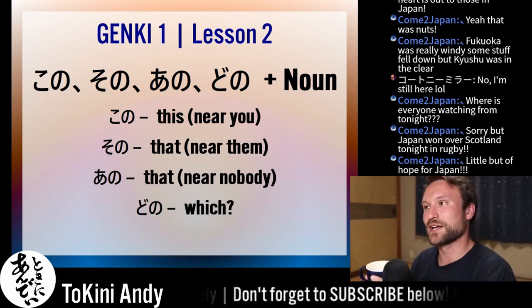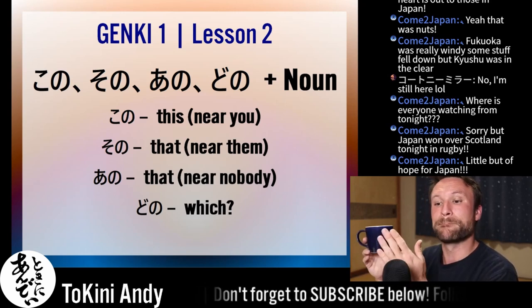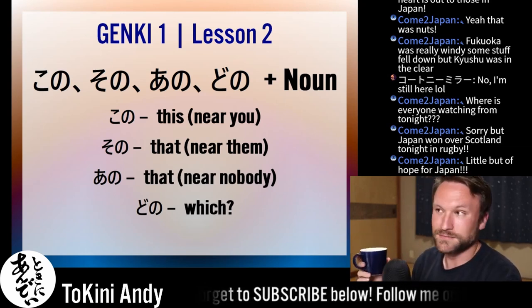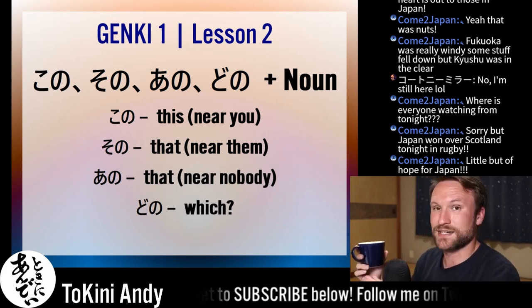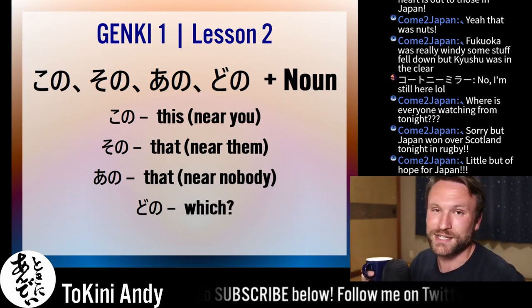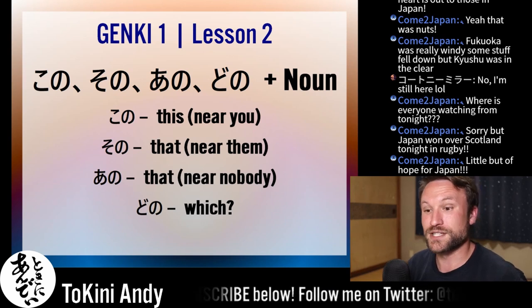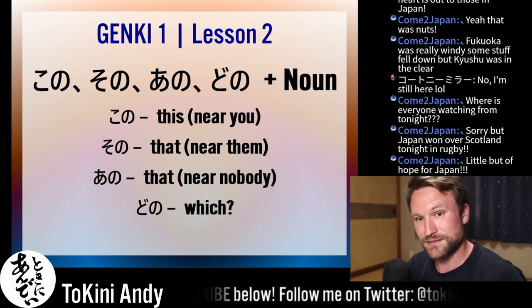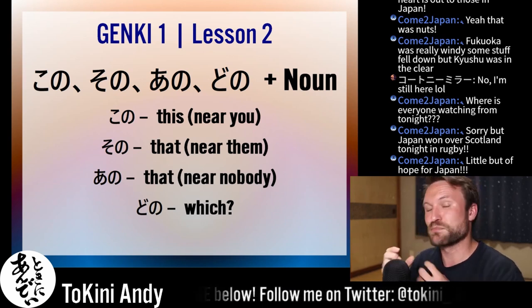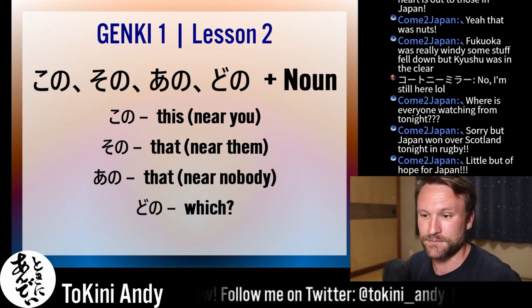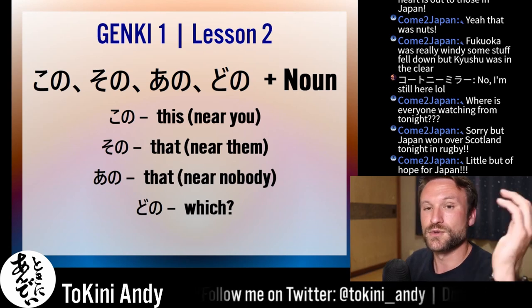You'd have to say 'kono kappu wa something something.' Nani iro desuka? So what color is this cup? Kono just means 'this,' but this particular thing, so it's more specific.